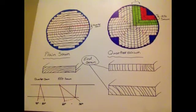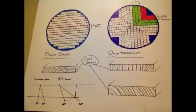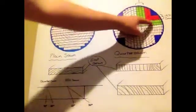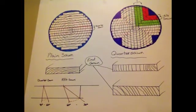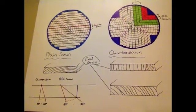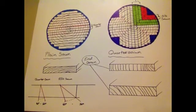Quarter sawn wood is cut from a section of the log that is vertical to the pith, here and here. Therefore the rings are straight and stable, also creating a straight grain on the face of the board.